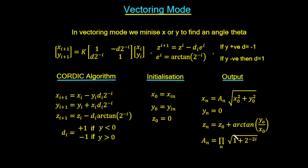We have three columns here. In the first column, we have the CORDIC algorithm. In the second column, we have an initialization — these are the values that we would initially put into the algorithm before we run it. After we have run the algorithm with this initialization, we're going to get particular outputs. We'll have a fixed algorithm which we know and understand, and then what we do is we just change the initialization values, and these changes will change the output for us.